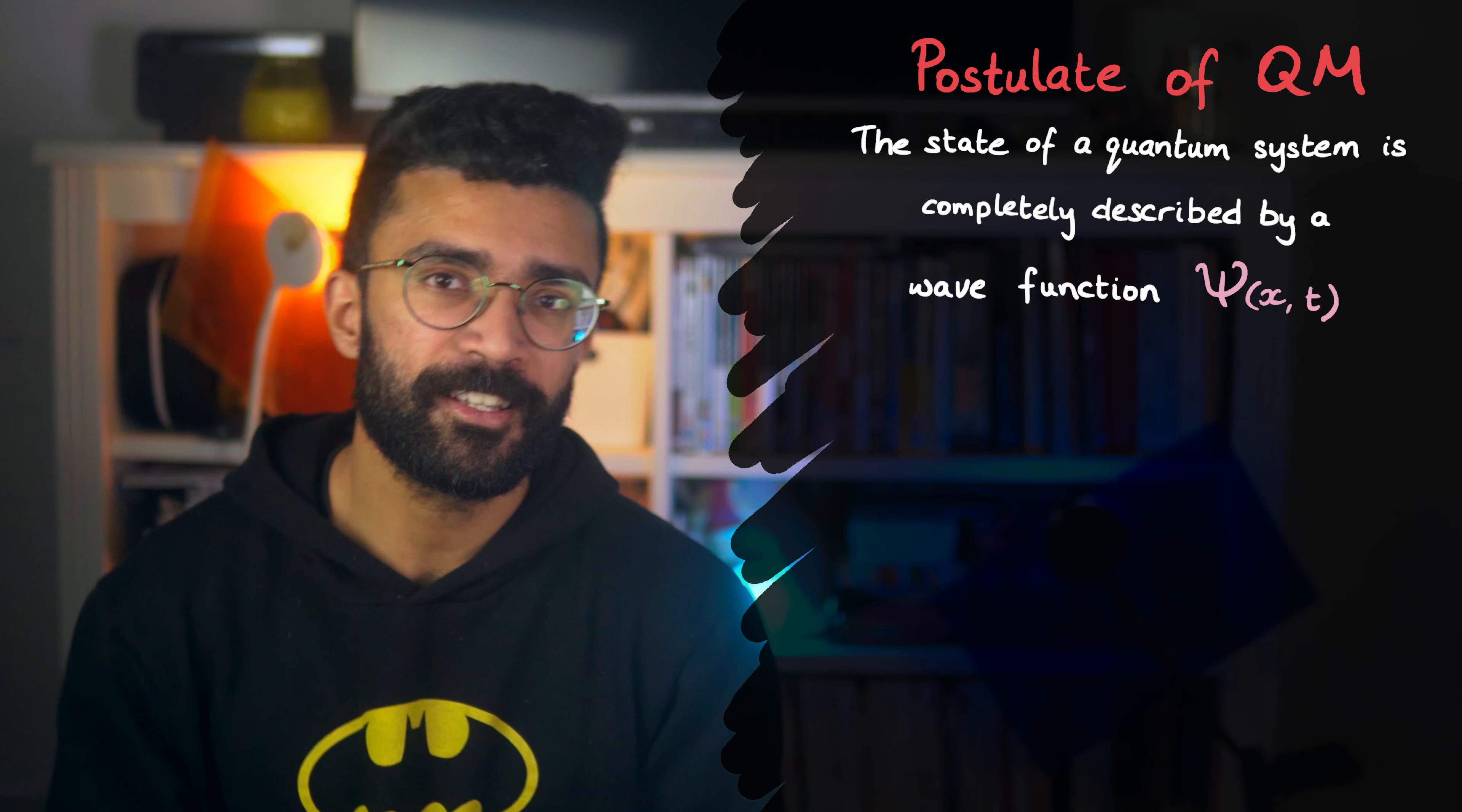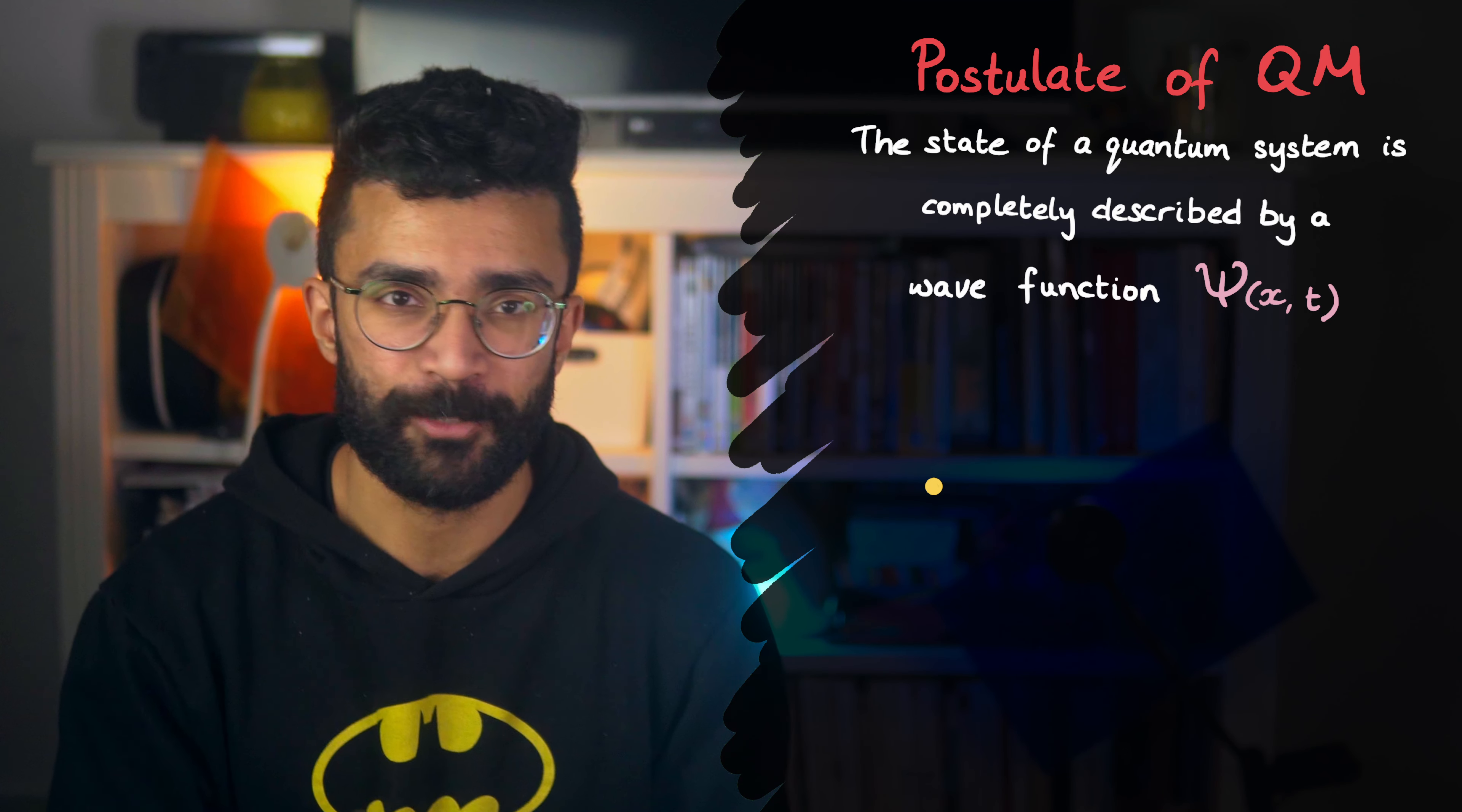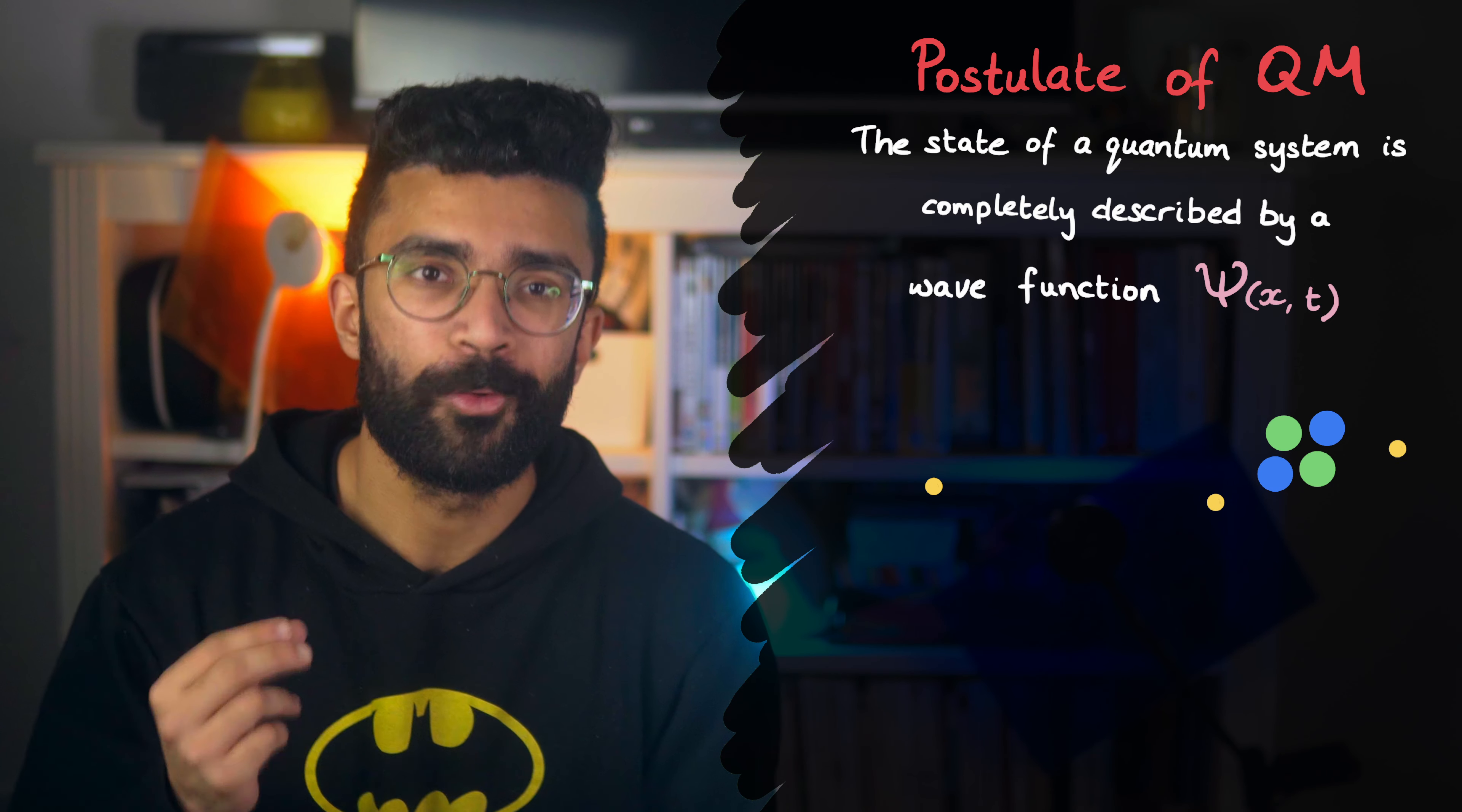Firstly, any system we study can be described in its entirety by a mathematical function called the wave function. So let's say there's a system we want to study, maybe a single electron in free space, or maybe a set of protons and neutrons found within the nucleus of an atom, as well as the electrons completing that atom. Each of these will have their own wave function, ψ.